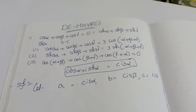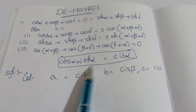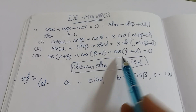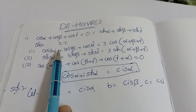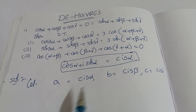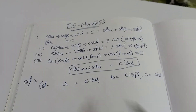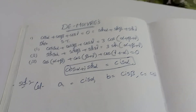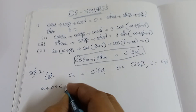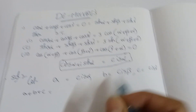Let us discuss how to prove this. The key formula is cos α + i sin α = cis α. Using this formula you can easily get the values. Since we have α, β, γ, let small a = cis α, small b = cis β, small c = cis γ. Now add all three: a + b + c = cis α + cis β + cis γ.